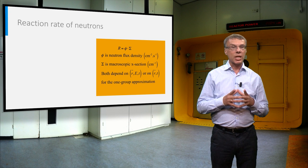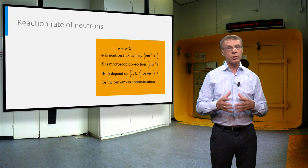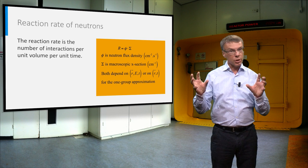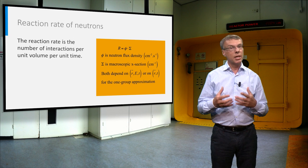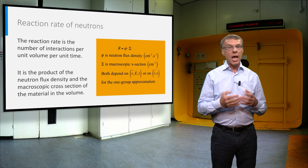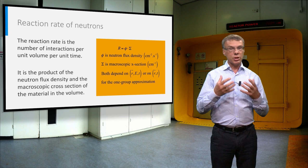On the previous slides we have seen that the neutron flux density is the total distance traveled by all neutrons per unit volume and per unit time, and that the macroscopic cross section is the interaction rate per unit distance traveled by the neutrons. This means that the product of these two factors gives the total number of reactions per unit volume per second, and this parameter is called the reaction rate density of the neutrons. Because the neutron flux depends on space, energy and time, and because the macroscopic cross section typically also depends on space and energy, the reaction rate density is also depending on these parameters.